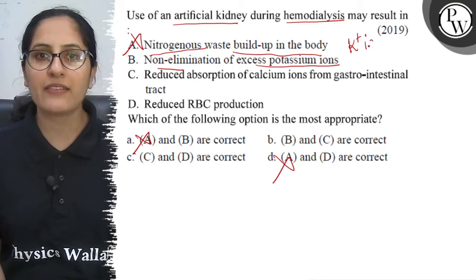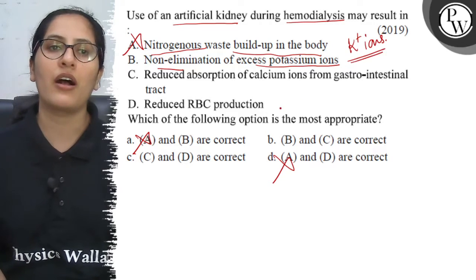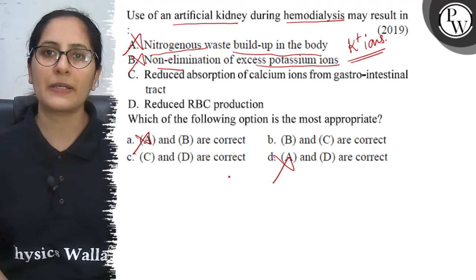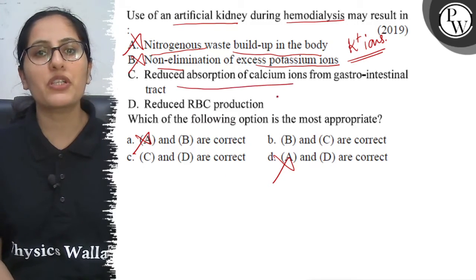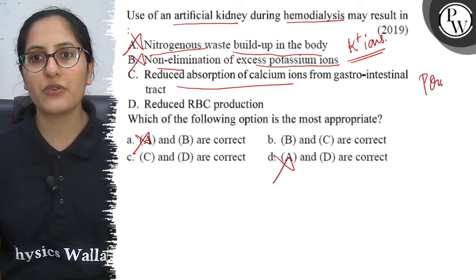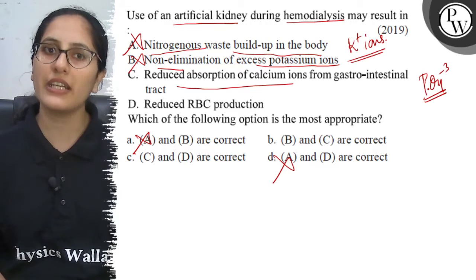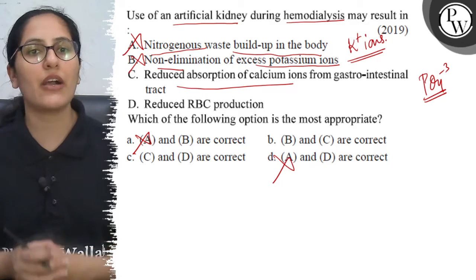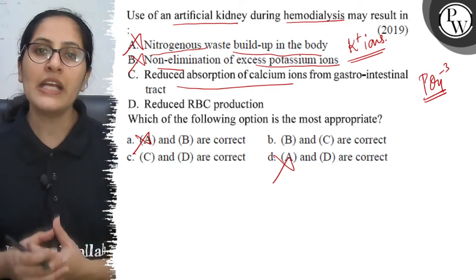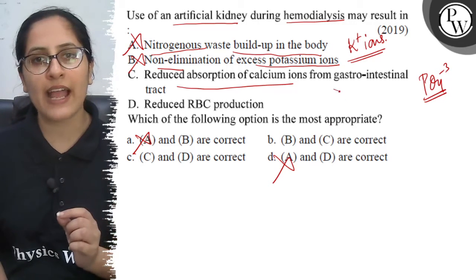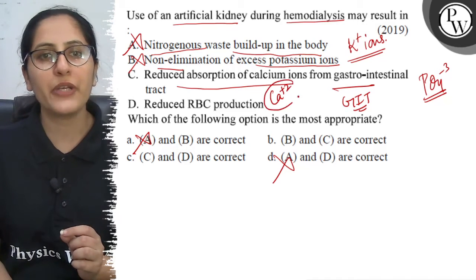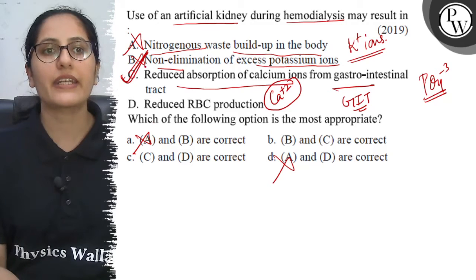Option B states non-elimination of excess potassium ions. If potassium ions are in excess, the artificial kidney will eliminate them as well — so this is also incorrect. Option C states reduced absorption of calcium ions. The artificial kidney removes phosphate ions, and along with phosphate ions, calcium ions are also eliminated, which causes reduced absorption of calcium ions in the gastrointestinal tract. So this point is correct.